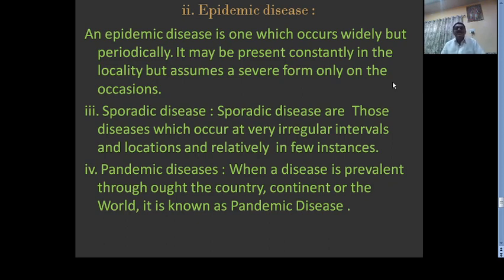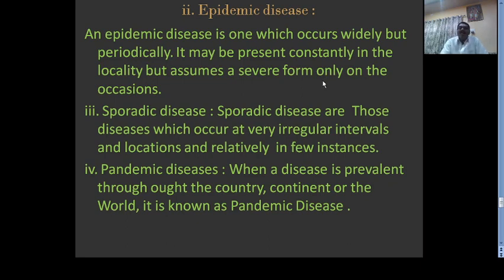Epidemic disease is one which occurs widely but periodically. It may be present constantly in a locality but assumes a severe form only on occasions. Examples include fire blight of apple, yellow vein mosaic of bhindi, and other viral diseases of papaya. These diseases occur only occasionally in severe form.